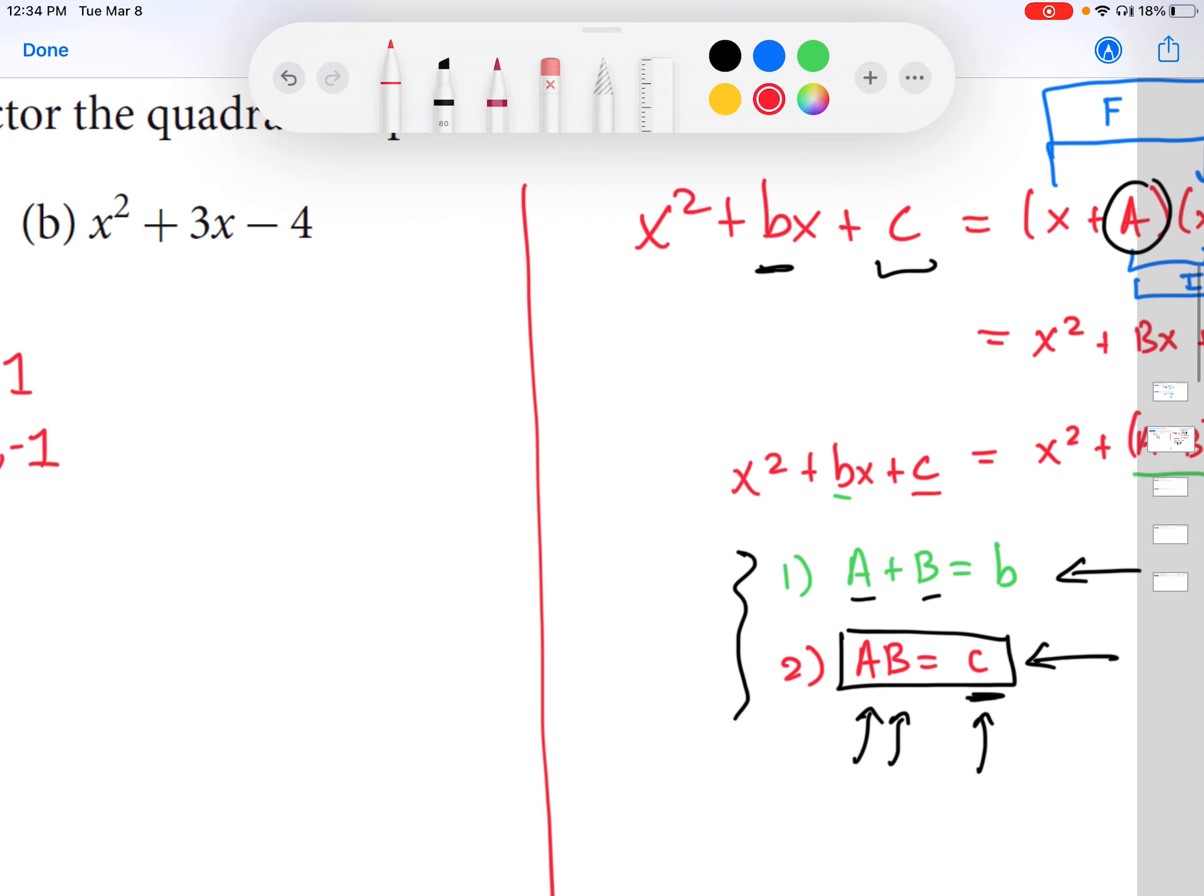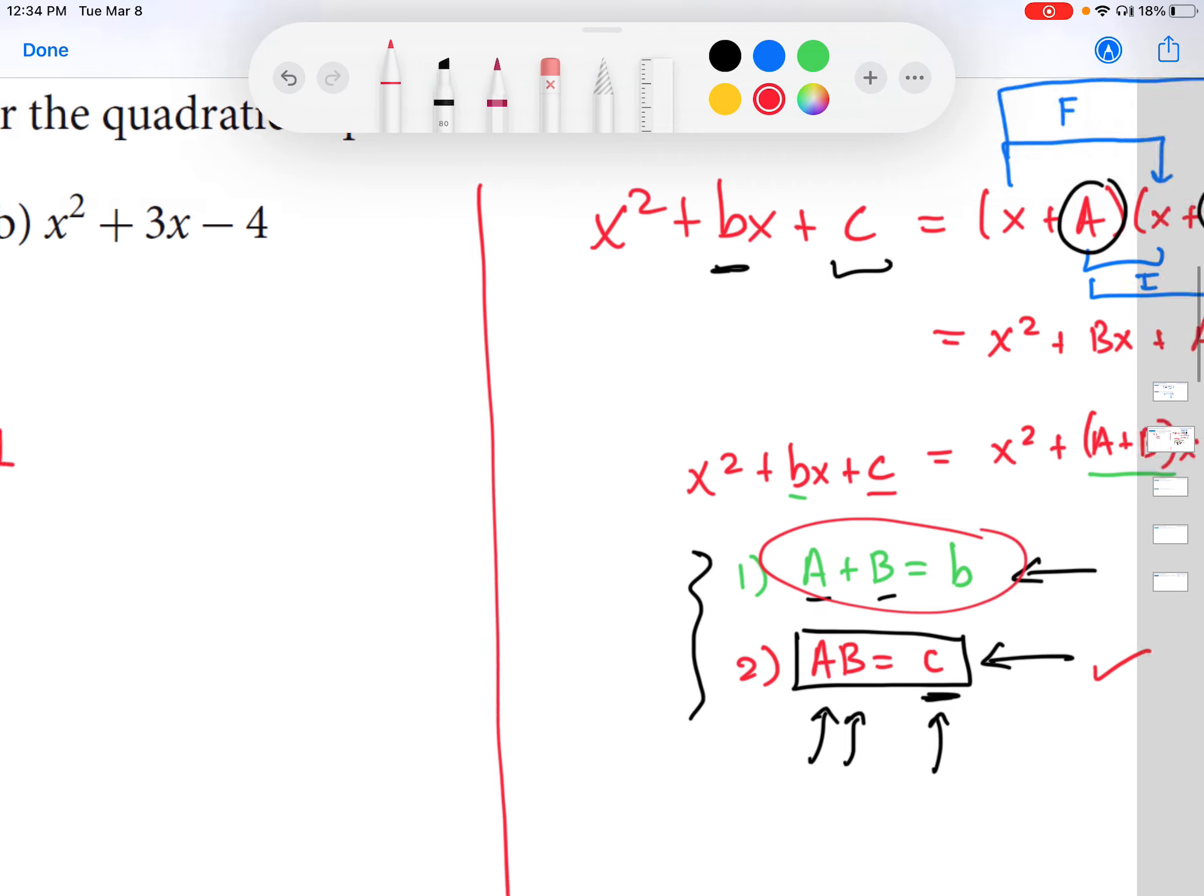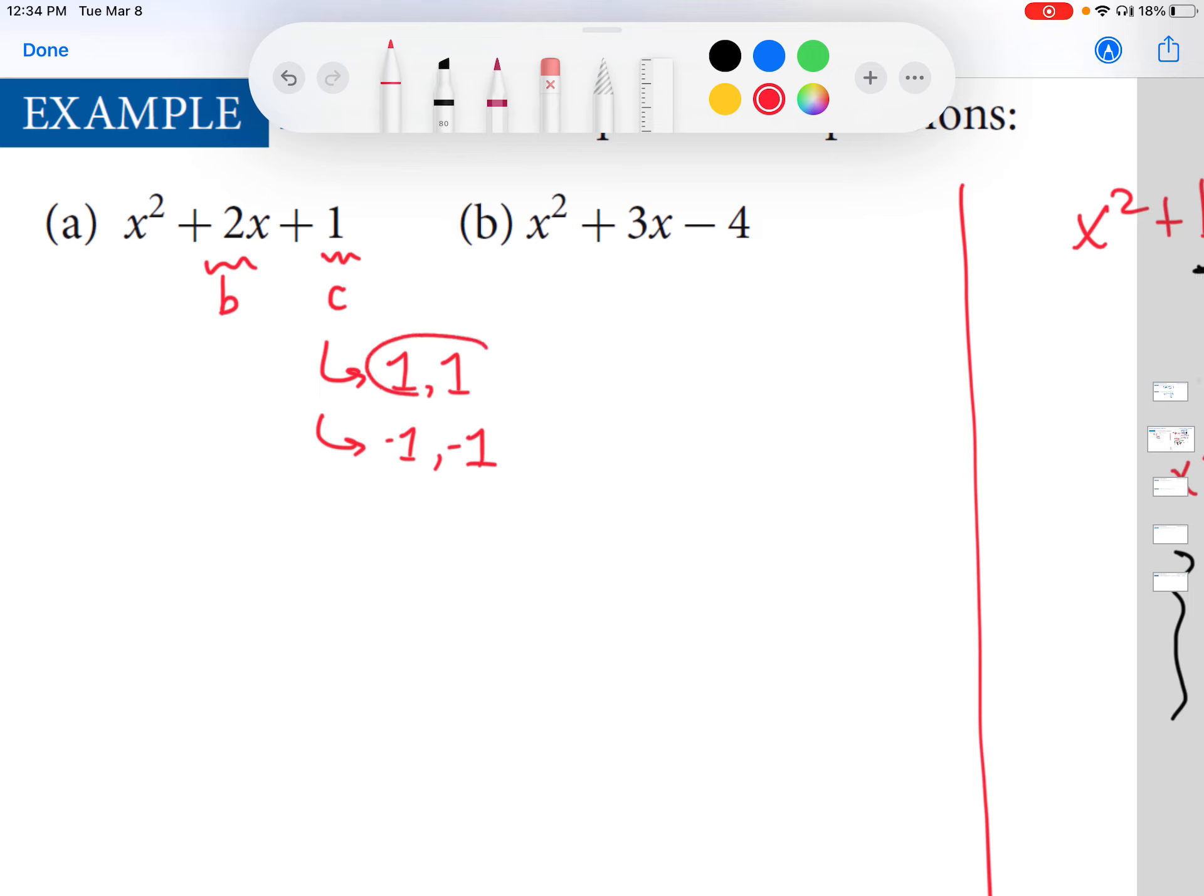Now we have investigated this condition. We found two factors of the little c in this problem, which is the number one. Now let's think about this condition. Of the factors that we found, which are the ones that add to little b? Okay, well, does one plus one equal two? Yes, so these do it. And you can pretty much stop here, right? You don't have to go off and find other factors. But just to illustrate, negative one plus negative one is negative two. That does not equal little b, so we do not want to use these as our factors.